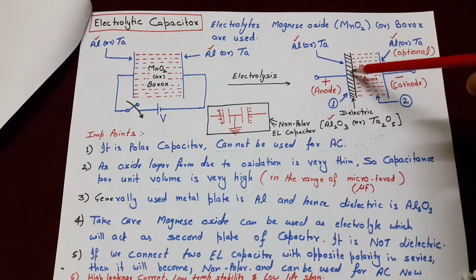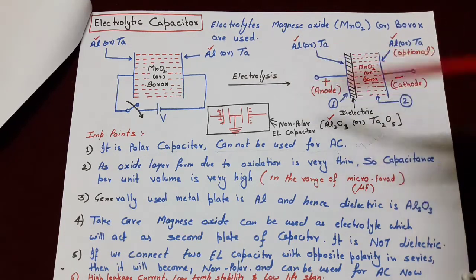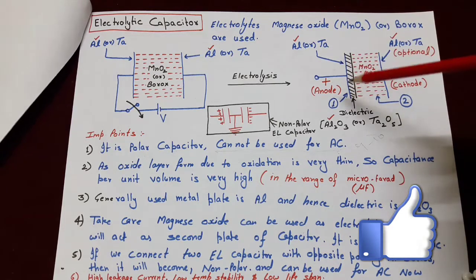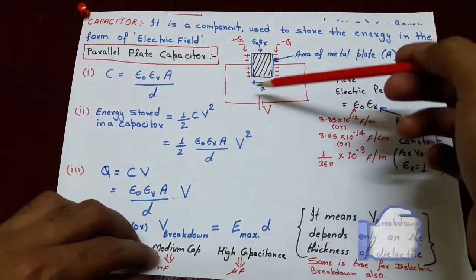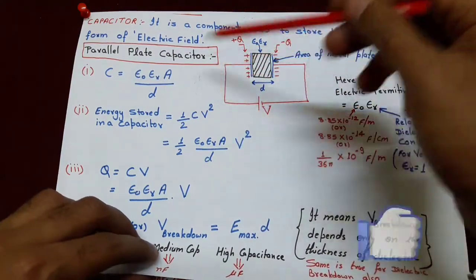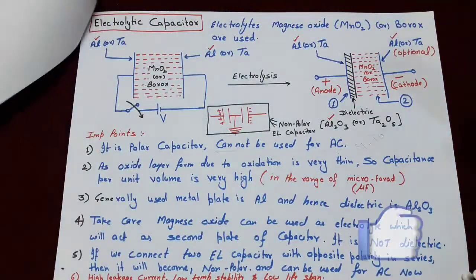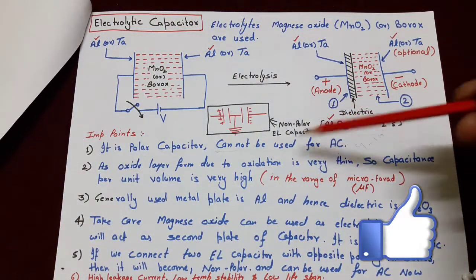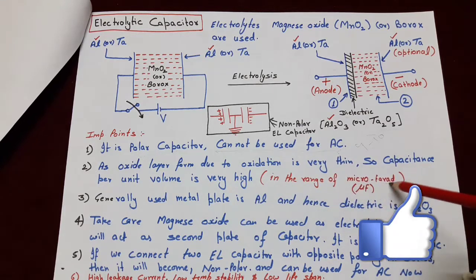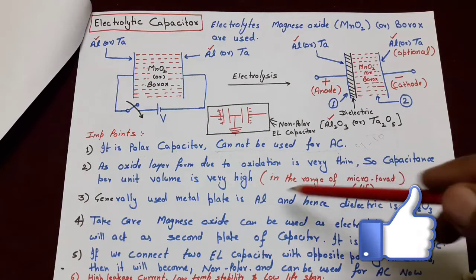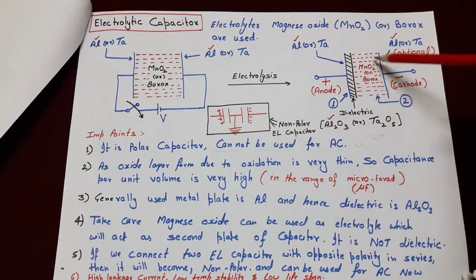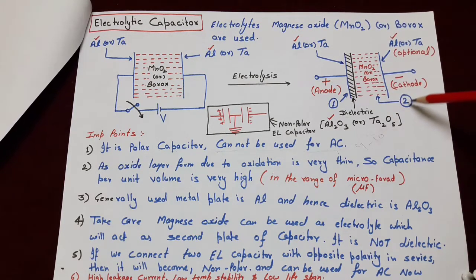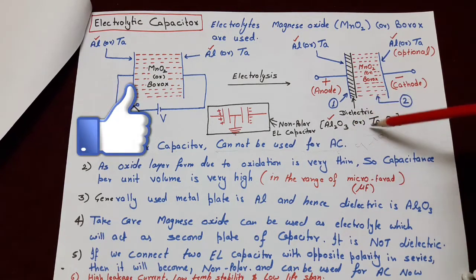Kyunki AC mein time ke saath voltage ya current ki polarity change hoti hai, aur polarity change hone par yeh capacitor work nahi karega. Now, kyunki yahan par jo dielectric form hua hai wo electrolysis ki wajah se form hua hai, is karan yeh jo layer hai iski thickness bahut hi kam hoti hai. Aur agar iski thickness bahut kam hai, iska matlab small d ki value bahut kam hai, aur distance between plates jitna kam hoga capacitance ki value utni hi jyada hogi, because capacitance is inversely proportional to separation between plates. Is wajah se jo electrolytic capacitors hote hain unki capacitance generally bahut high rehti hai — high capacitance means in the range of hundreds of microfarad — and we can say these capacitors have high capacitance per unit volume. Yahan ek dhyan rakhne wali baat yeh hai ki manganese oxide MnO₂ is used as an electrolyte, not as a dielectric; dielectric form hone ke baad is electrolyte ne capacitor ki second plate ki tarah act kiya hai, aur jo dielectric hai wo Al₂O₃ ya Ta₂O₅ banta hai depending upon the type of metallic foil.